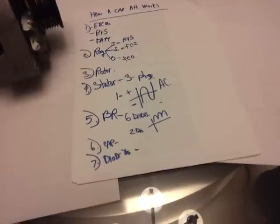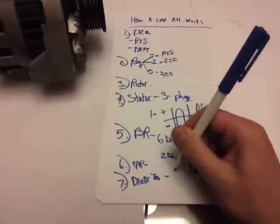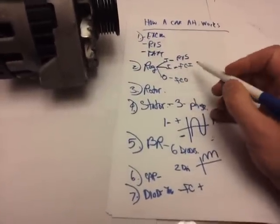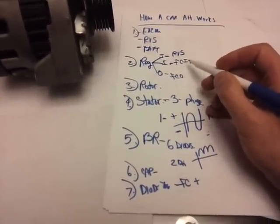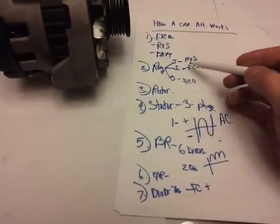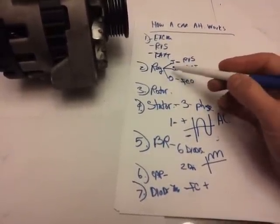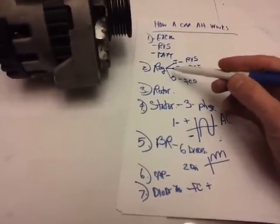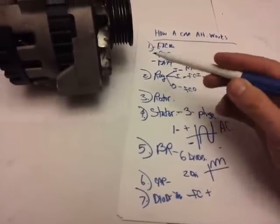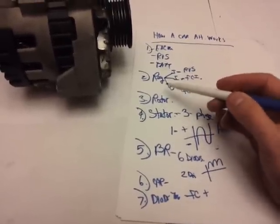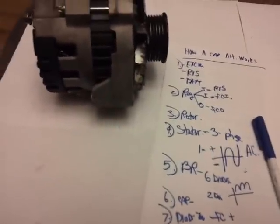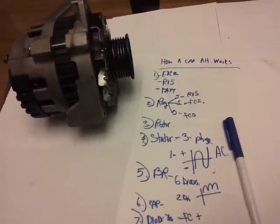What that does is this sends the field current, the positive field current—remember, positive—to this regulator right here. Now we're coming full circle. So the output of this rotor sends the positive field current to this regulator. You need money to make more money. So then the regulator takes this current and through the brushes onto the rotor, from the brushes to the slip ring, copper slip rings, it gives it more power or less power from this field current right there. And that is how a car alternator works.